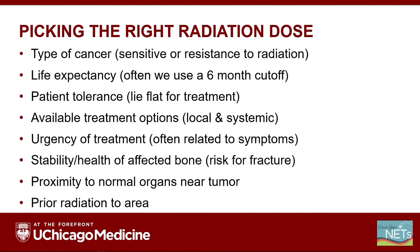So how do we pick the best dose for a given patient and personalize treatment? We think about the type of cancer — is it resistant or sensitive to radiation? How long do we expect to need to control the tumor? What's the life expectancy of a given patient? How tolerable is the treatment itself — can the patient lay flat for upwards of 10 to 20 minutes if needed? What are all the available treatment options, both localized and systemic? How urgent is the treatment needed — is the pain so unbearable that we need to treat right away, or do we have a bit more time to come up with a more complex plan? What's the health of the bone — is it at risk for fracture? Is the lesion located next to another area of the body that is very sensitive to treatment and needs to be protected? And finally, has the area been previously radiated? That is definitely an important factor we need to account for when designing any radiation plan.